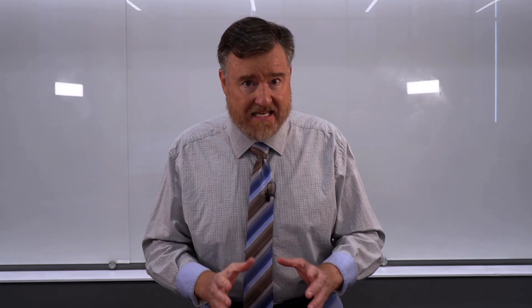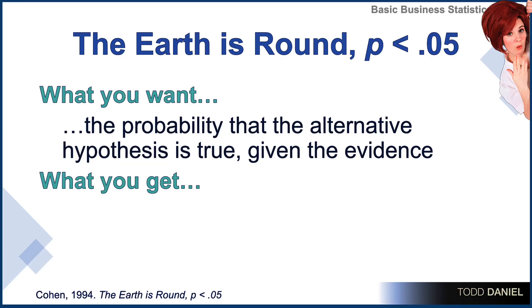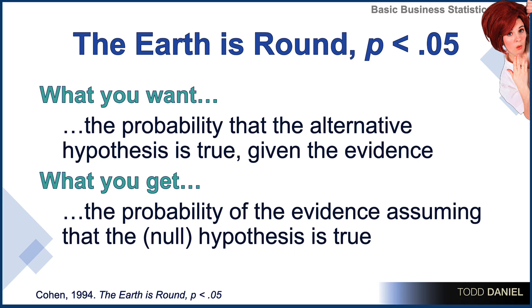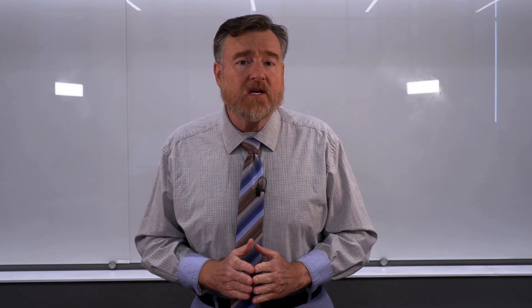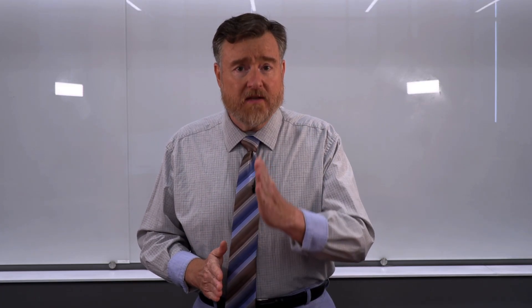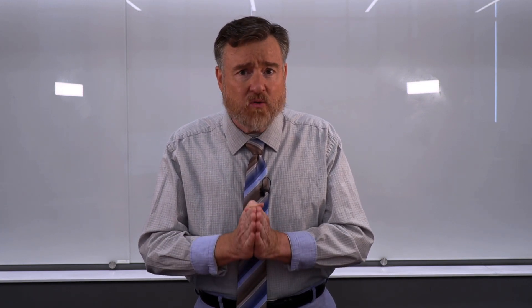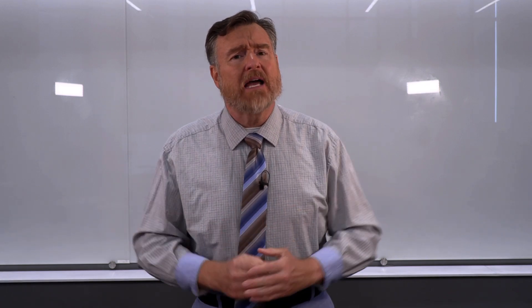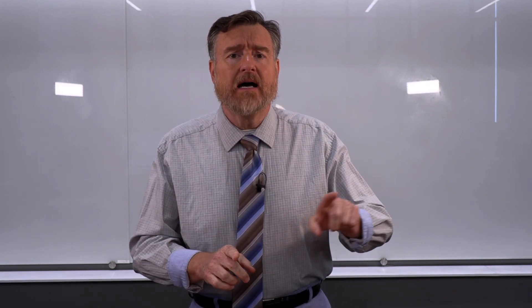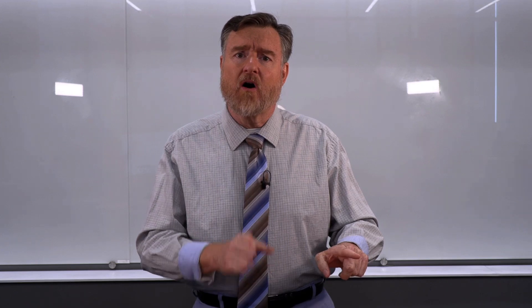But what we are getting is the probability of this evidence, assuming that the null hypothesis is true. If there really was no difference between the sample mean and the population mean, if that mean difference was truly zero, how likely is it that we would have gotten a sample mean this far away from the population mean?